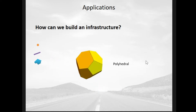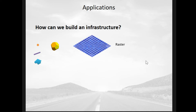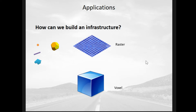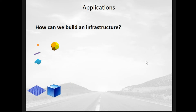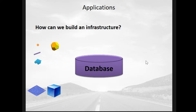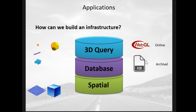If we want to go into 3D we've got to start thinking about polyhedrals — 3D vectors. For raster data we use voxels to go into 3D. How do we store this? It's spatial data, so we use a spatial database. We also want to be able to 3D-query this data. Once we can get it into this kind of infrastructure, we can make it accessible via online WebGL, online GIS, consider conversions to archival formats, and still connect through conventional GIS systems.